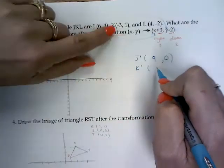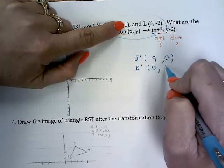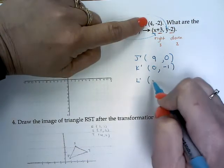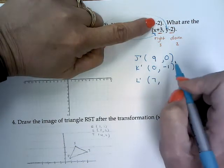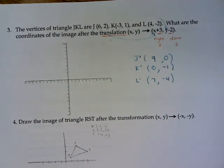You just take the ordered pair and shove in X for X and Y for Y and you can mathematically solve it as well. So for K, negative three plus three is zero. One minus two, negative one. And for L, four plus three is seven. Negative two minus two is negative four. I do not have to graph it. It's only asking me for the coordinates. You will find some on your test or multiple choice just asking for the coordinates. You can certainly graph them if you want to beforehand, but you do not have to.